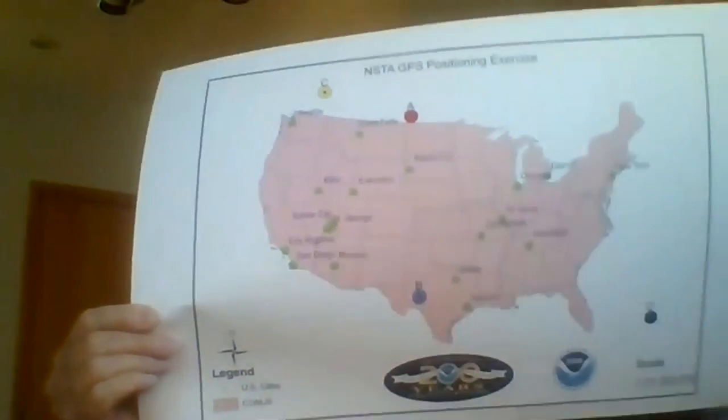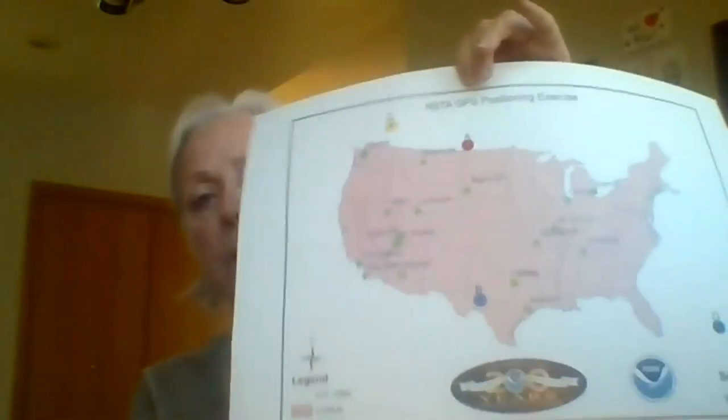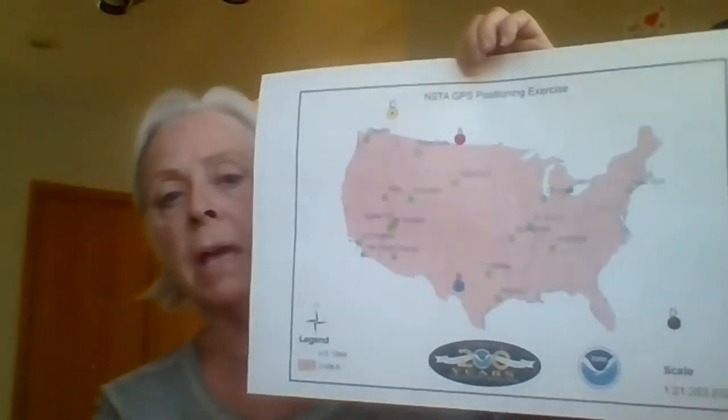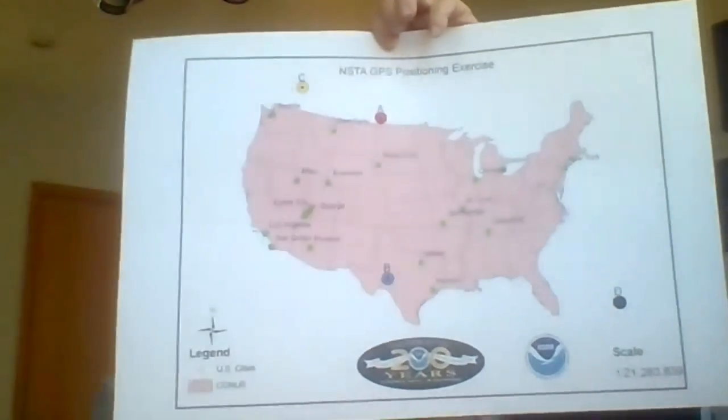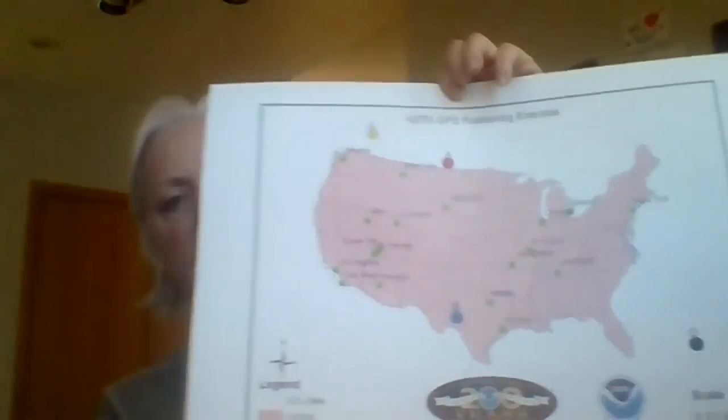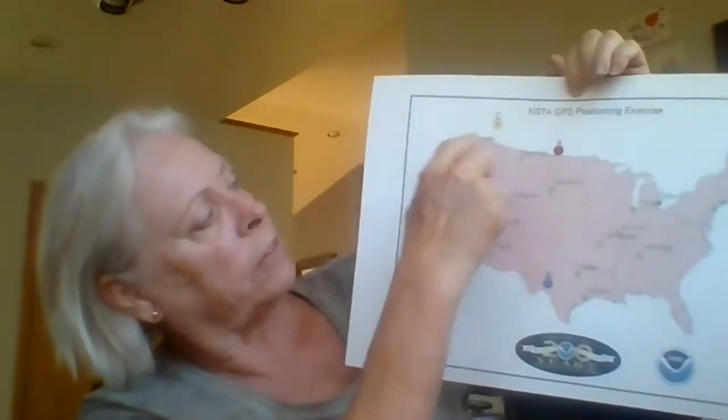I wanted to share with you today an activity from the GPS STEM curriculum on trilateration. Before we get started and I share my screen, I'll show you the website. I wanted to show you this chart that I had blown up and printed at a local print shop. This is an 18 by 24, it's about $1.28, and you'll notice it has four spots here.